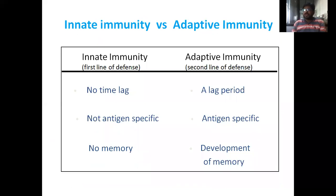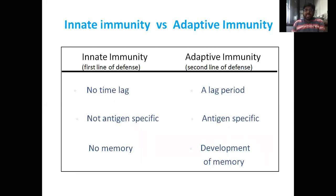What is the difference between innate and adaptive immunity? Innate immunity has no time lag, but adaptive immunity takes a lag period for adaptation. Innate immunity is not antigen-specific, but adaptive immunity is antigen-specific. There is no memory in innate immunity, but adaptive immunity develops memory — it can memorize antigens through the production of antibodies.